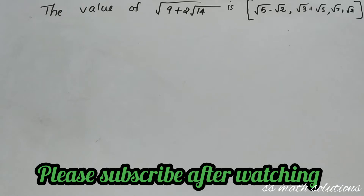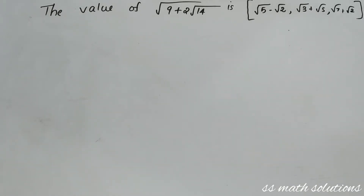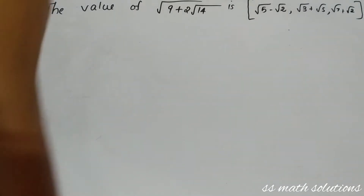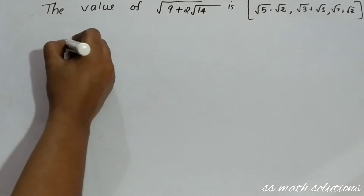Here is the question: the value of √(9 + 2√14) is — options are given in the bracket. How to find the value of this? It's very easy. We call the given expression √(9 + 2√14) as x.